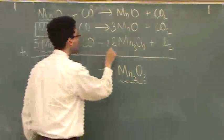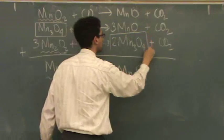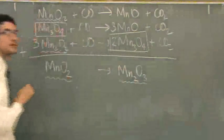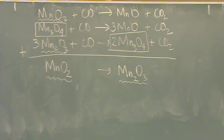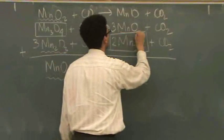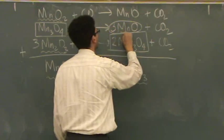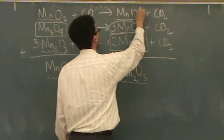Mn₃O₄, it appears in two places. That doesn't appear in the final reaction. Also, this one doesn't appear. I'll circle it. MnO, the manganese 2-oxide.